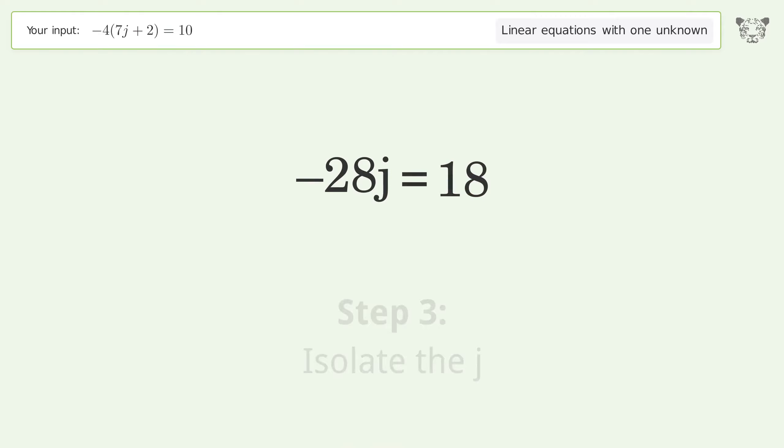Isolate the j. Divide both sides by negative 28 and cancel out the negatives.